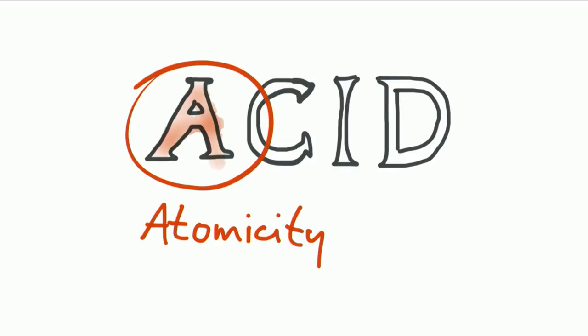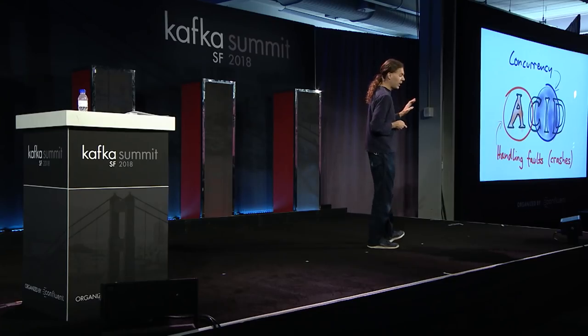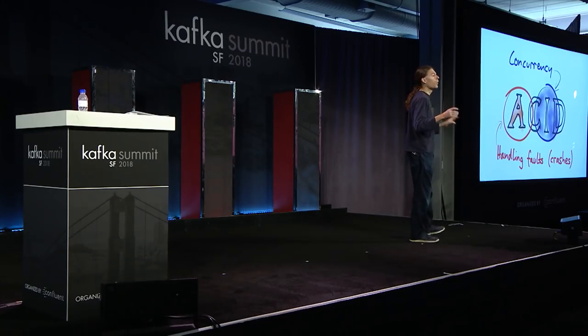Let's look next at the A — Atomicity. There's a little confusion around what this means, because if you're familiar with multi-threaded programming, you get things like atomic increments or atomic compare-and-set operations, which are about concurrency. But the A in ACID is not about concurrency — that's actually under the letter I. Rather, Atomicity is about how we handle faults — like if something crashes, or a server loses power suddenly, or things become disconnected from each other. The letter I, about concurrency, we'll come back to later.